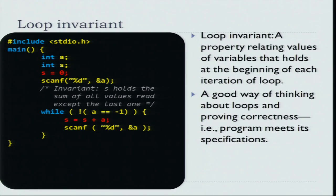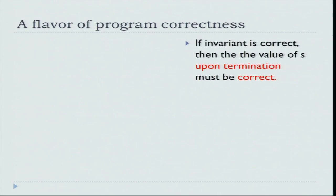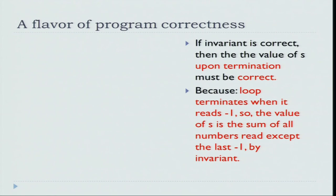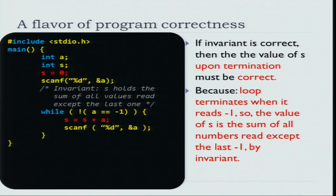This is the loop invariant in the program, and loop invariants help you argue about the correctness of the loops. If the loop invariant is correct and the program maintains the loop invariant, then the value of S when the program stops will be correct. Why is that? Because the loop terminates when the last value read was a minus 1, and the invariant says that S holds the sum of all values except the last value. This means that S holds the sum of all numbers except the minus 1. Therefore, when the program ends and you exit out of the loop, S holds the sum of all numbers that you were supposed to add. This is how arguing about a loop invariant helps you confirm that the program is correct.